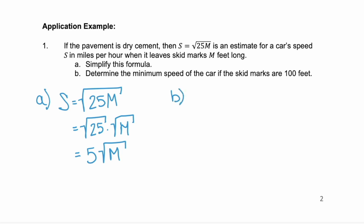Now let's look at part B — determine the minimum speed of the car if the skid marks are 100 feet. Skid marks are represented by m, so m equals 100. We take our simplified formula, s equals 5 times the square root of m, and substitute in 100 for m.